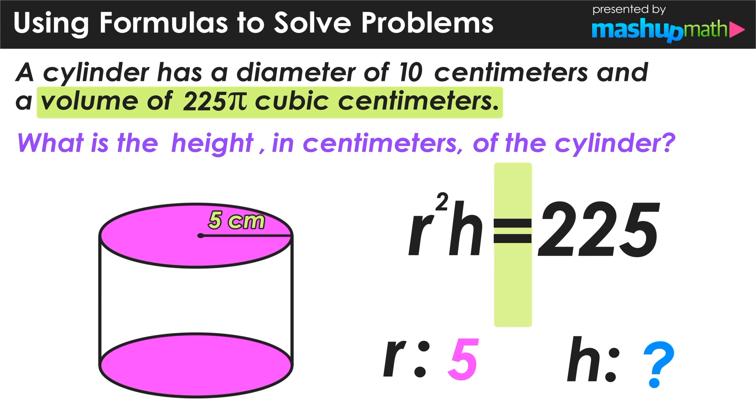Now since we know that the radius of the cylinder is 5, we can substitute the value of r with 5 and we know that 5 squared is equal to 25.